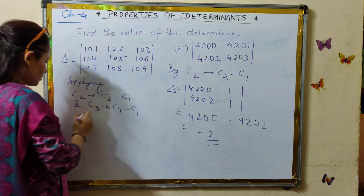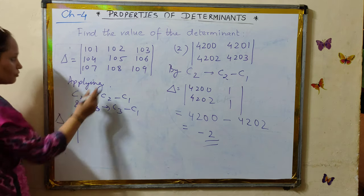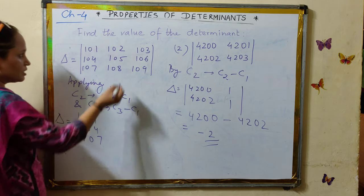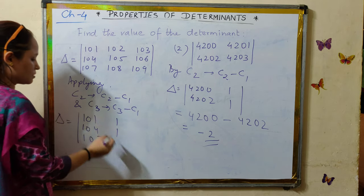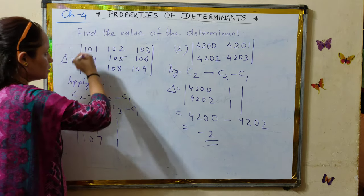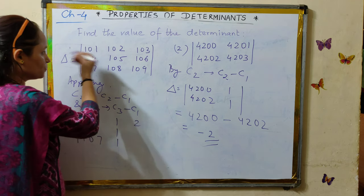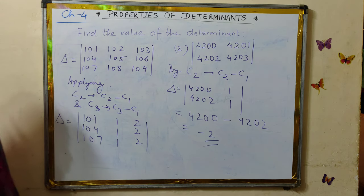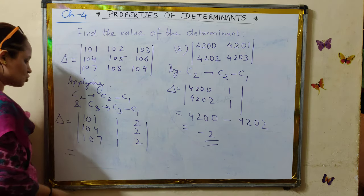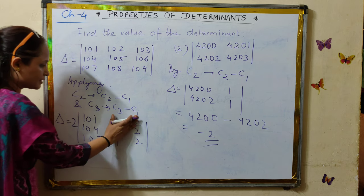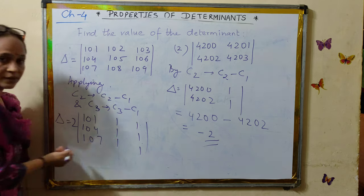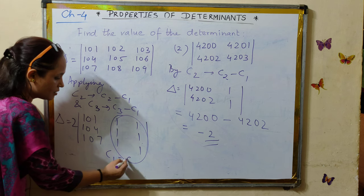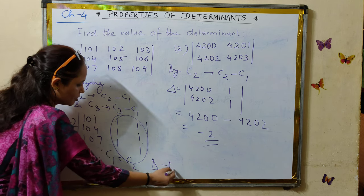So we are simplifying the entries of column 2 by doing column 2 minus column 1, while column 1 remains unchanged. Then take 2 common from the last column. The entire third column has a factor of 2, so we take it outside. After this, the second and third columns become identical — both are 1, 1, 1. Since two columns are identical, the value of the determinant is 0.